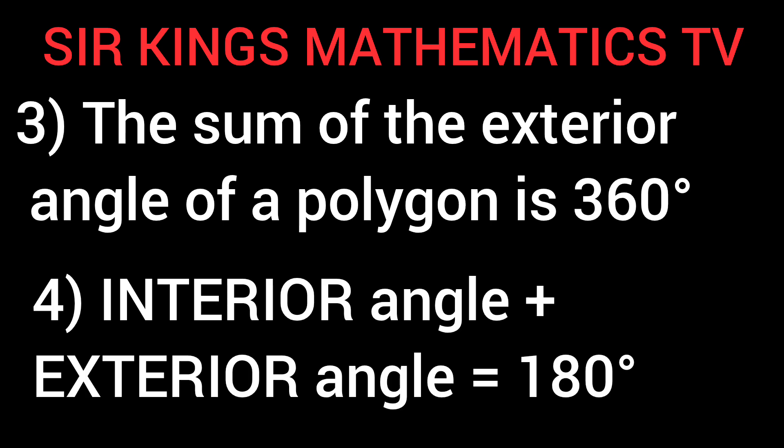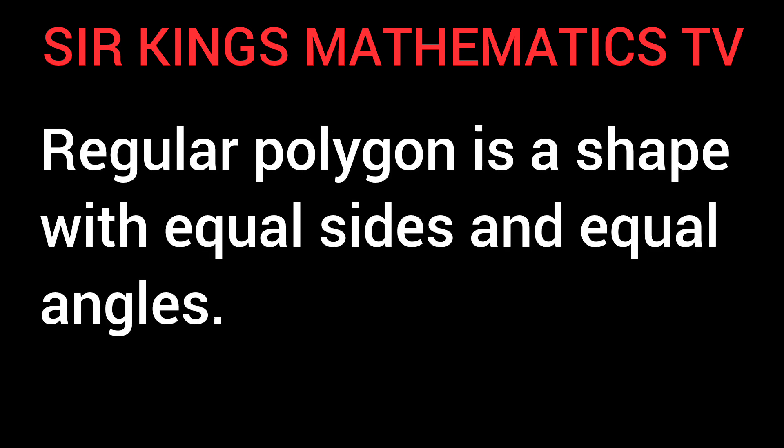Note 4: Interior angle plus exterior angle equals 180 degrees. Note 5: A regular polygon is a shape with equal sides and equal angles.